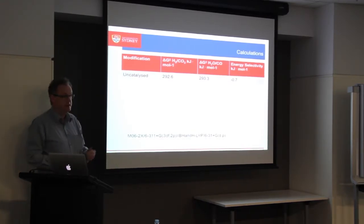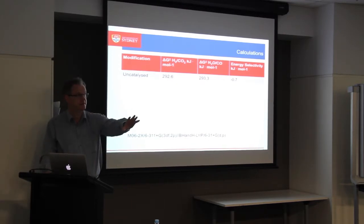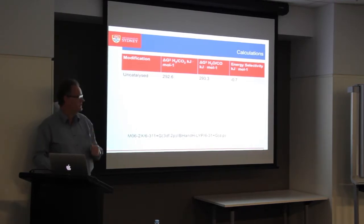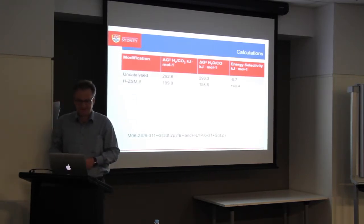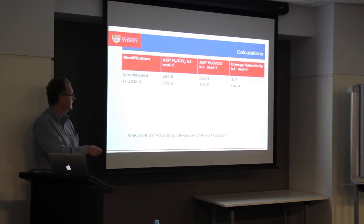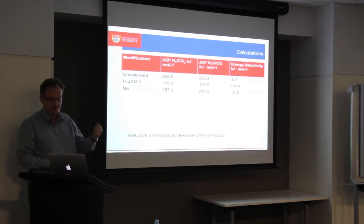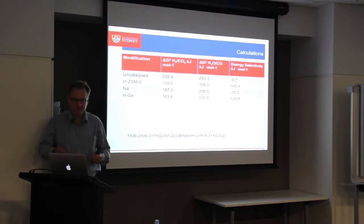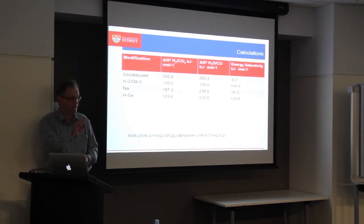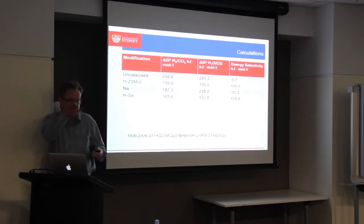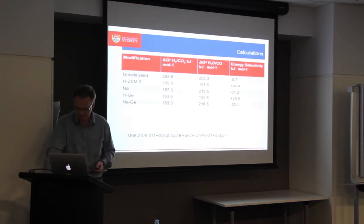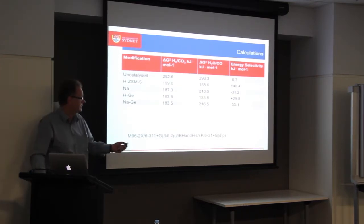I've introduced a term here called energy selectivity. If that is negative, I'm favoring dehydrogenation; if it's positive, I'm favoring dehydration. So you can see we're massively in favor of dehydration with acidic ZSM-5. If I now make it basic, I'm favoring dehydrogenation. If I make the framework a little bit more basic by putting germanium in, I'm moving from 40 to 29.8, moving in the direction I'd like. If I put sodium on top of that, I'm really in a good situation.